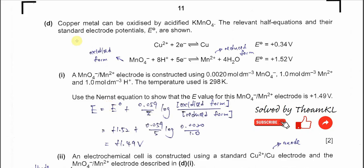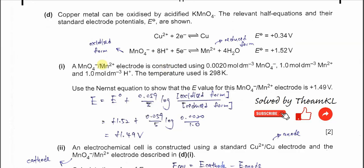Part D: Copper metal can be oxidized by acidified manganate(VII). The standard electrode potentials given are: Cu²⁺/Cu = +0.34 V, and MnO₄⁻/Mn²⁺ = +1.52 V. For part 1, the manganate electrode is constructed using 0.002 mol dm⁻³ MnO₄⁻ ion, 1 mol dm⁻³ Mn²⁺ ion, and 1 mol dm⁻³ acid at 298 K. Part 2: Use the Nernst equation to show the E value for this manganese electrode is 1.49 V.